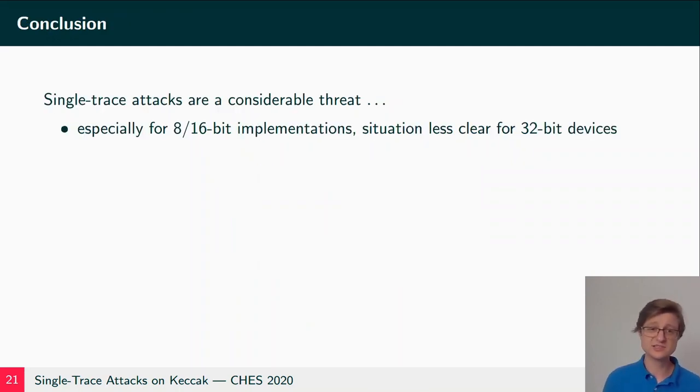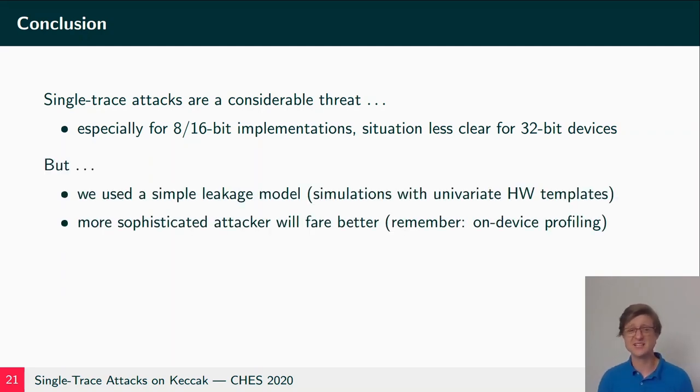So what does this all tell us? This tells us that single trace attacks are still a considerable threat, especially for 8 and 16-bit implementations. And while the situation might be less clear for 32-bit devices, here we can say that we used a simple leakage model like simulations with univariate Hamming weight templates. It's likely that more sophisticated attacks will fare better. And here I mean attackers using localized EM measurements. That is not all that unrealistic that such an attacker exists, because remember, we can do the profiling directly on the device in many cases.